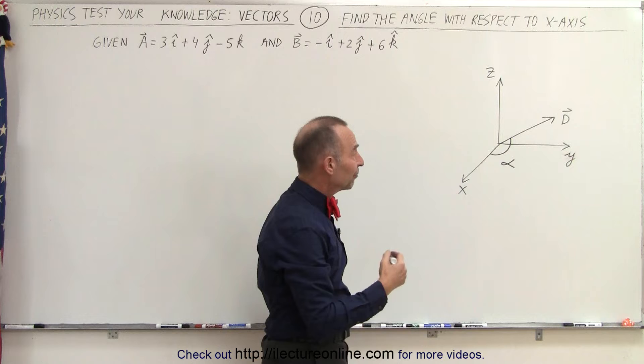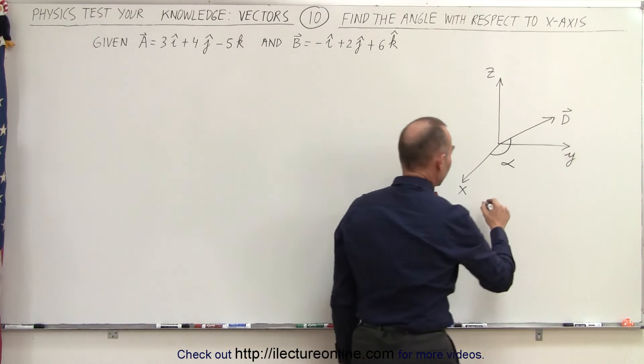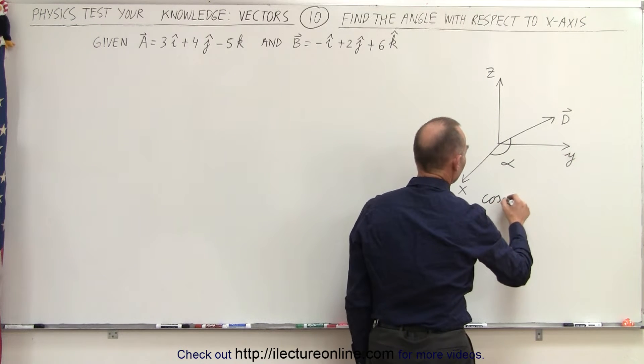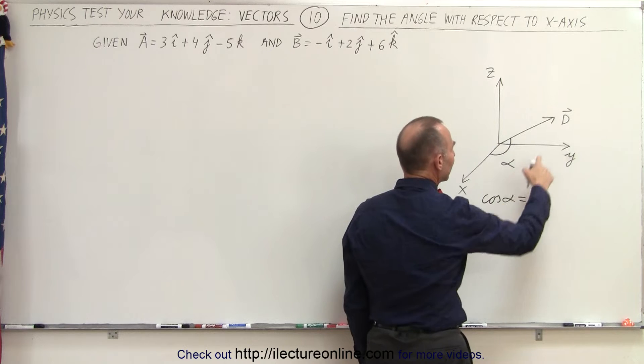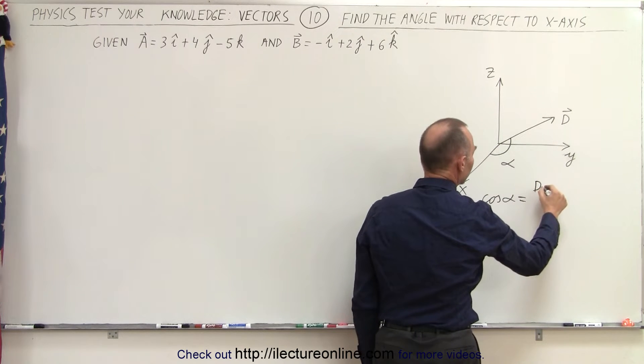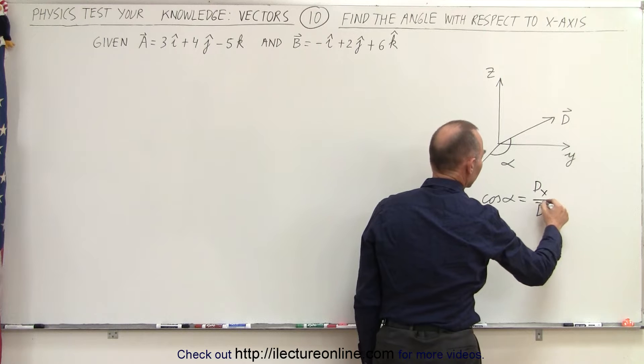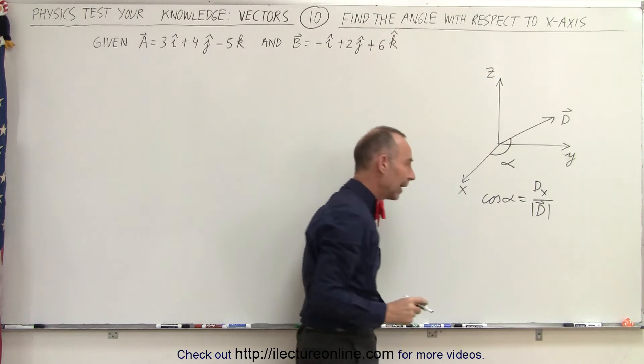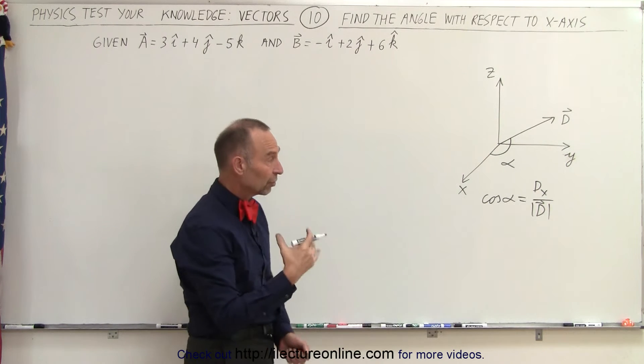So what we could do is we could find the direction cosine. We can find the cosine of alpha, and that is defined by taking the x component of the vector and dividing it by the magnitude of the vector. So I can maybe write the magnitude like that, and that will give us the direction cosine.